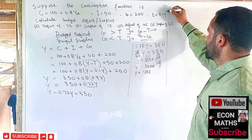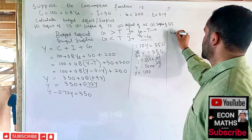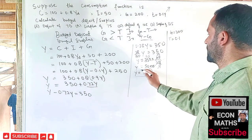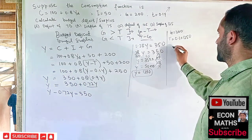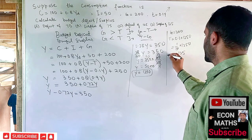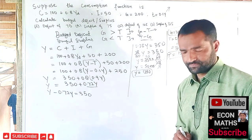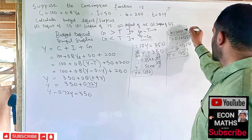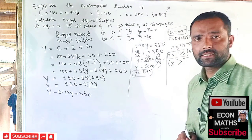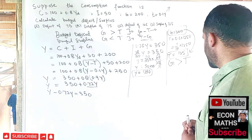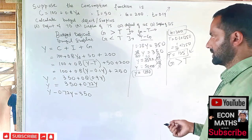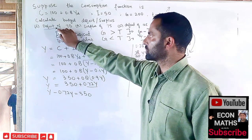Now we can calculate our values. Government expenditure G = 200. Tax T = 0.1 × Y = 0.1 × 1250 = (1/10) × 1250 = 125. We can clearly see that government expenditure (200) is greater than tax revenue (125), so we have a budget deficit situation. This means either the deficit of 75 or the deficit of 125 option would be correct.